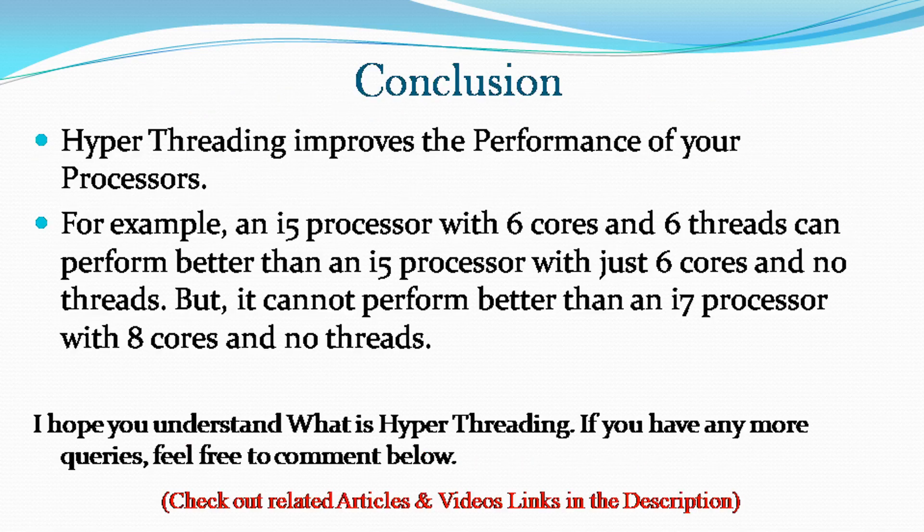Hyper-threading improves the performance of your processors. For example, an i5 processor with 6 cores and 6 threads can perform better than an i5 processor with just 6 cores and no threads. But it cannot perform better than an i7 processor with 8 cores and no threads.